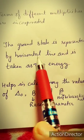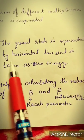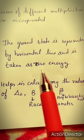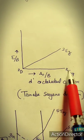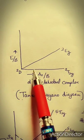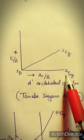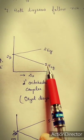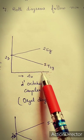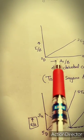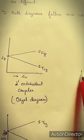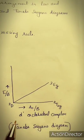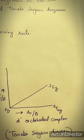An important characteristic of Tanabe-Sugano diagrams is that the ground state term is represented by the horizontal line and is taken at zero energy. In a Tanabe-Sugano diagram, this ground state term lies on the horizontal line at the zero energy scale, while in the Orgel diagram the ground state term is above the zero energy horizontal line.